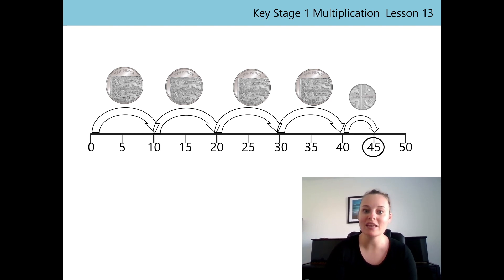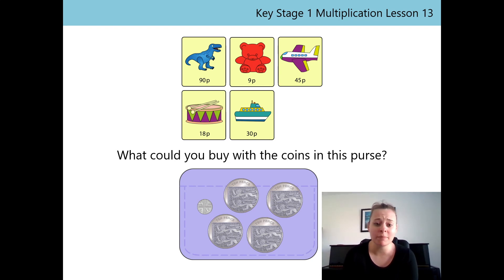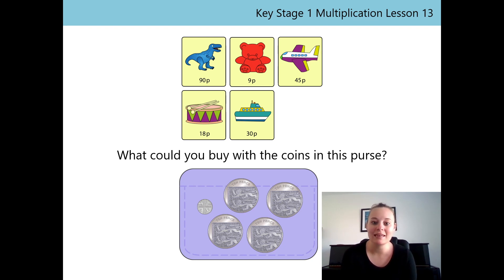So let's go back to the question to see what we can buy with our 45P. Can we buy the dinosaur? No, we can't buy the dinosaur — because the dinosaur costs 90P and we only have 45P. Could we buy the teddy bear? Yes — because the teddy bear costs 9P and we have 45P in our purse. Well done. Can we buy the aeroplane? We can — because the aeroplane costs 45P and we have 45P in our purse. Well done.